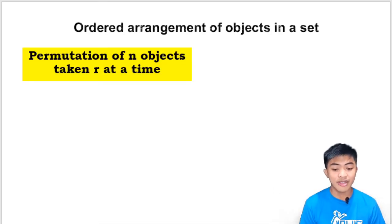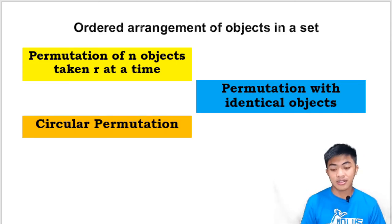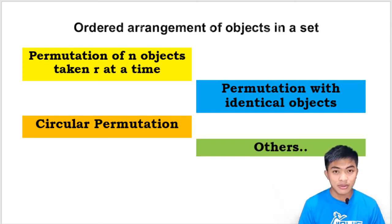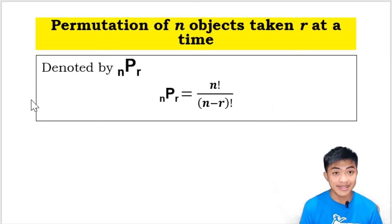We have here permutation of n objects taken r at a time. We also have permutation with identical objects or distinguishable permutations, and we have here circular permutations and others. Sometimes kasi magbibigay sila ng permutation problem wherein may special condition. So let's start with the permutation of n objects taken r at a time. This is denoted by this notation: maliit na letter n, tapos like a capital letter P, tapos maliit na letter r. We read that as permutation of n objects taken r at a time, and we use this formula.